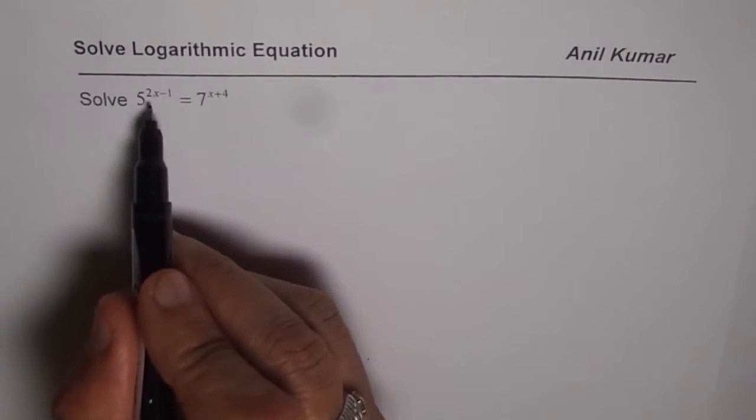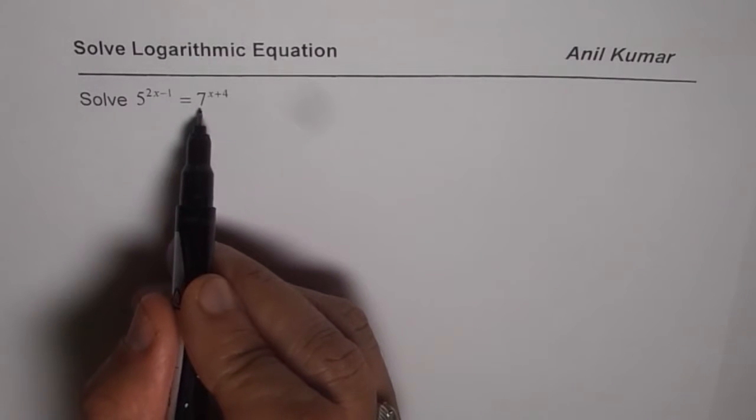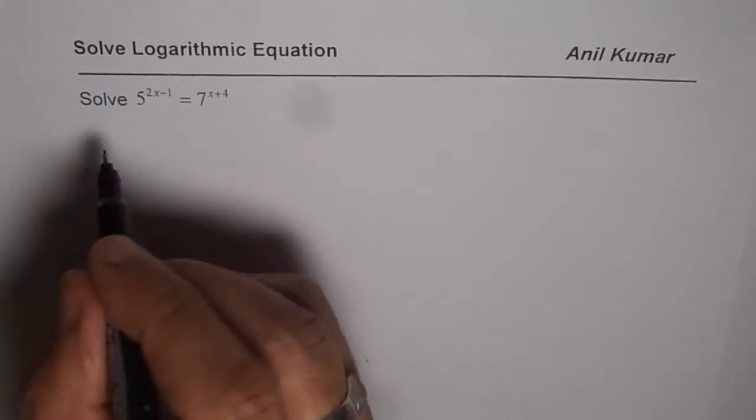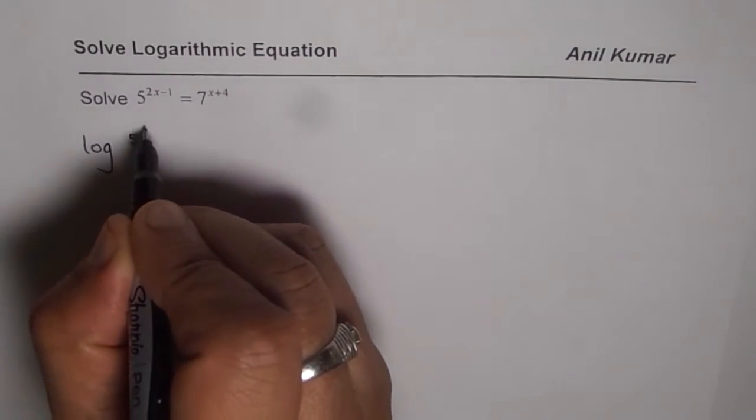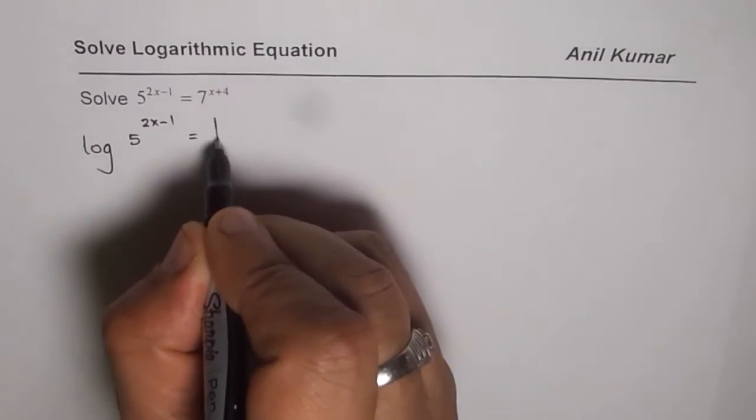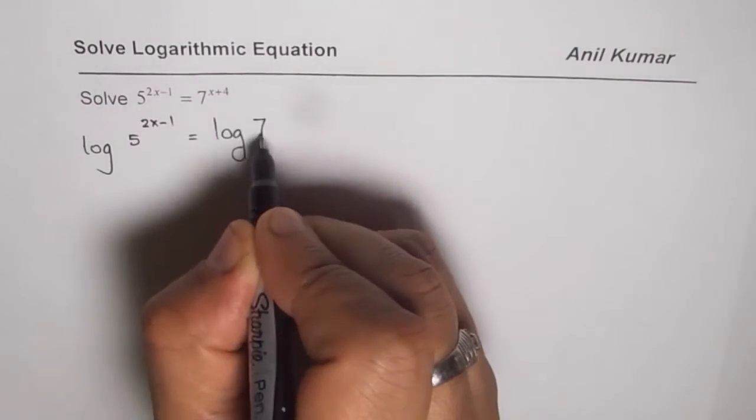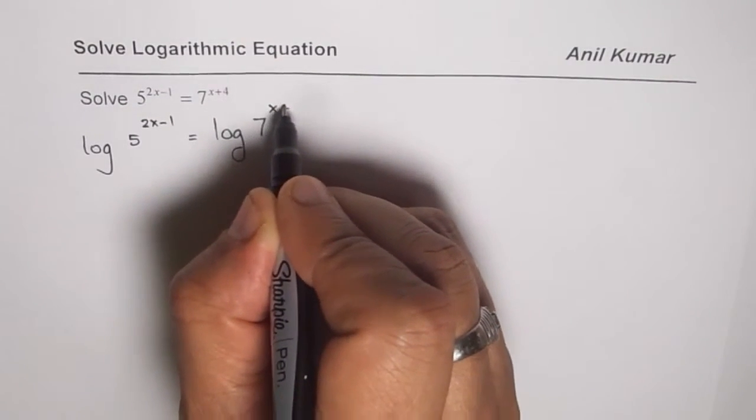So we have given 5 to the power of 2x minus 1 equals to 7 to the power of x plus 4. Let's take log on both sides and we get log of 5 to the power of 2x minus 1 equals to log of 7 to the power of x plus 4.